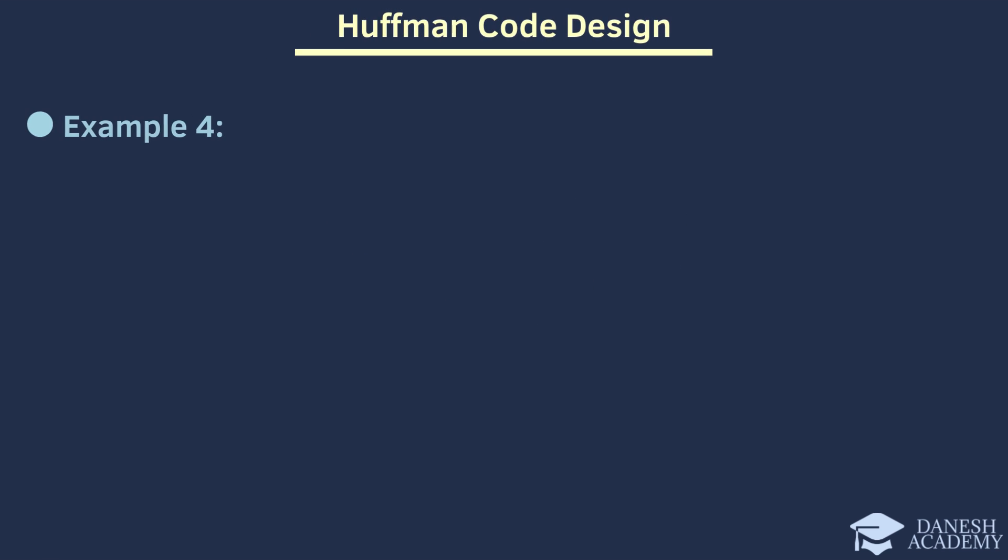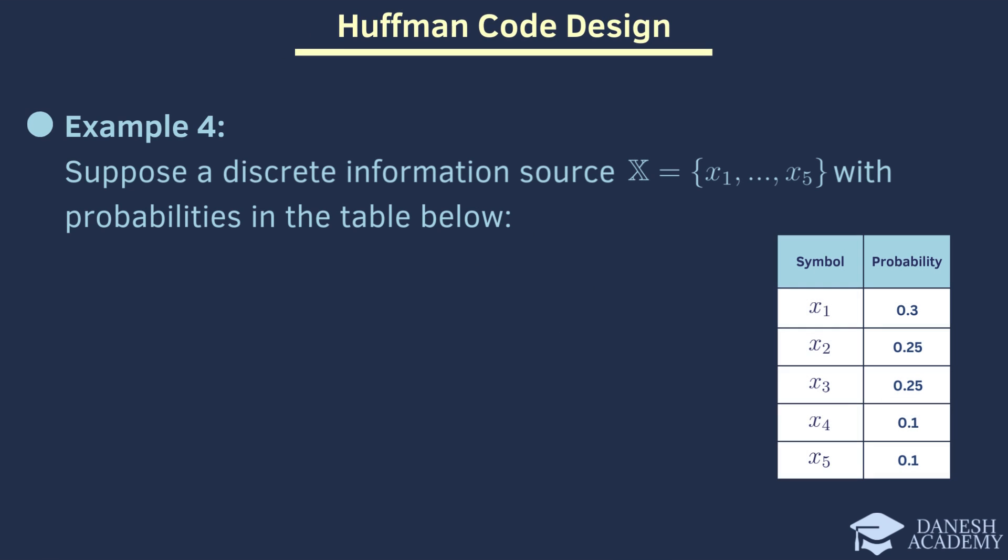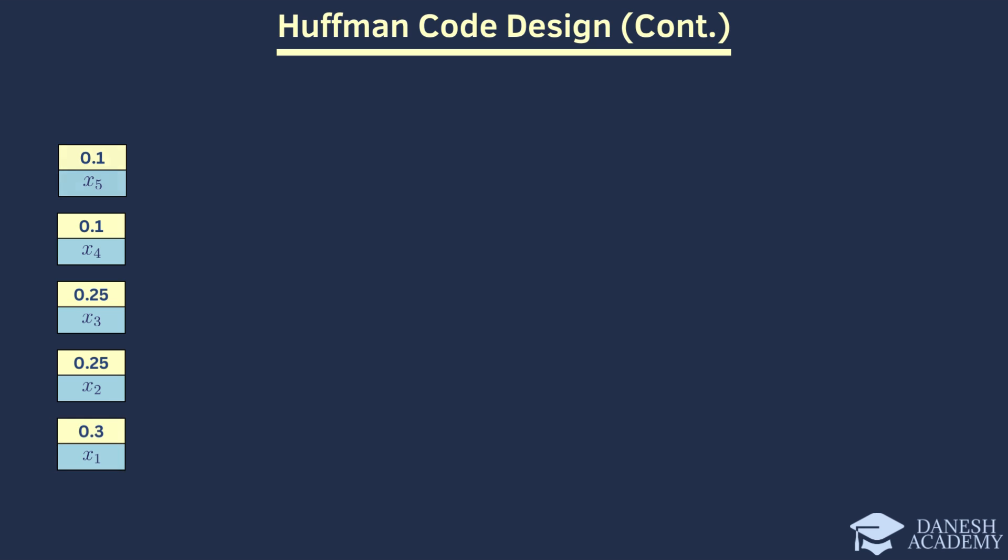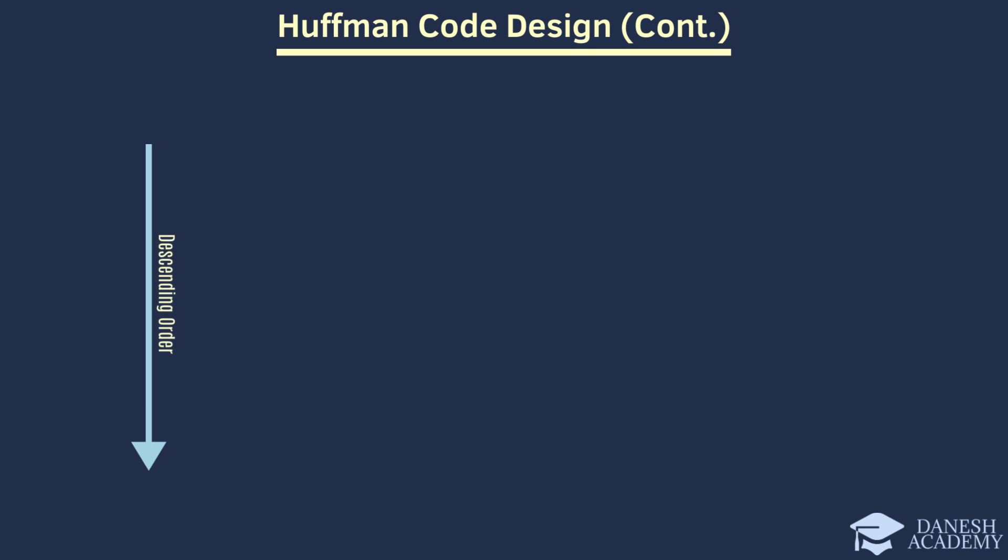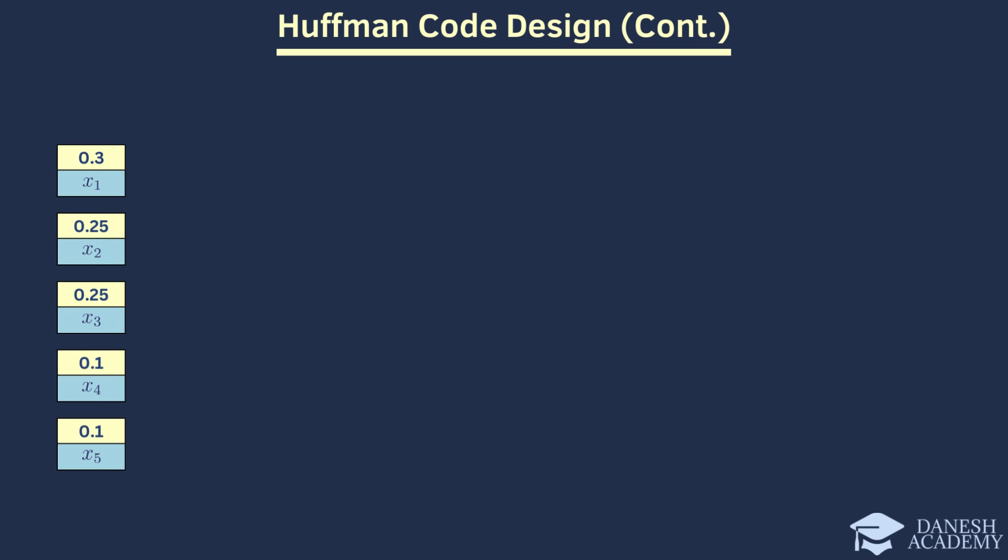Now, we come to an interesting discussion of Huffman code design. Suppose a discrete information source consisting of symbols X1 through X5. Our goal is to design Huffman code for that. Let's consider the symbols aligned with their probabilities. We need to ensure that the symbols aligned with their probabilities are arranged in descending order. If they are not, we will need to rearrange them accordingly. First of all, we begin by considering two symbols with lower probabilities. One symbol is assigned the value 0, while the other is assigned 1. This assignment can be reversed as well. Then, we sum the probabilities of these two symbols together.